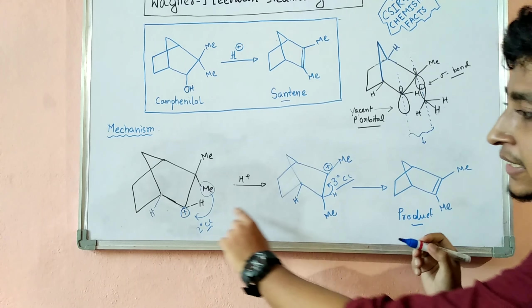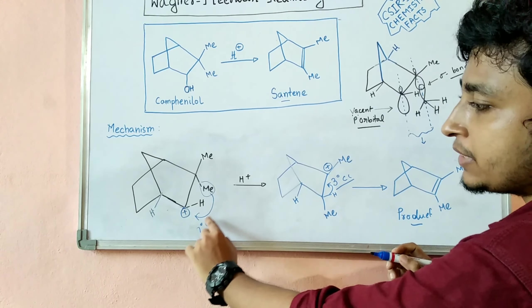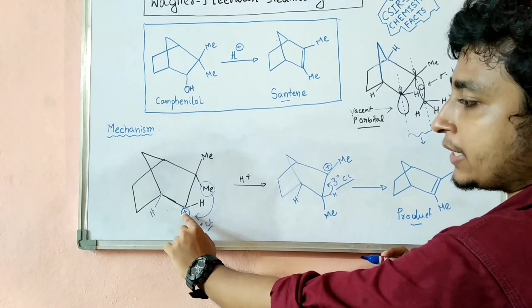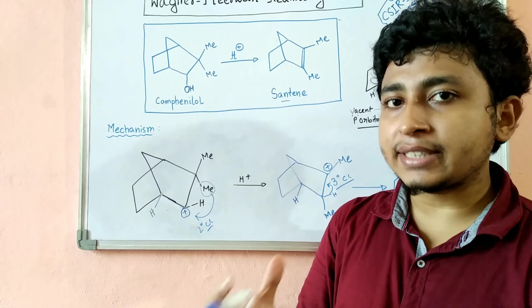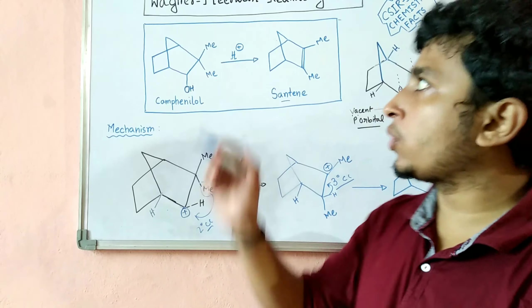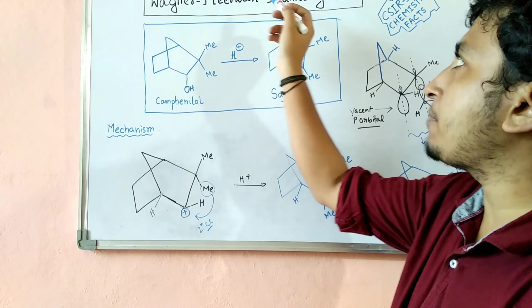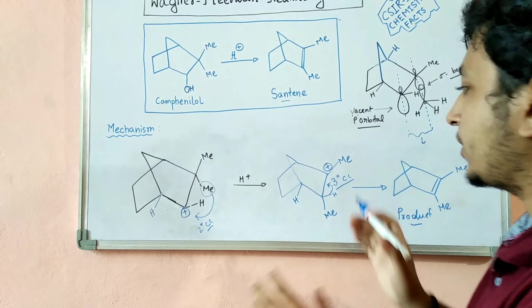This shift of a methyl group — or more generally, an alkyl group shift at a carbocation center — is known as the Wagner-Meerwein rearrangement.